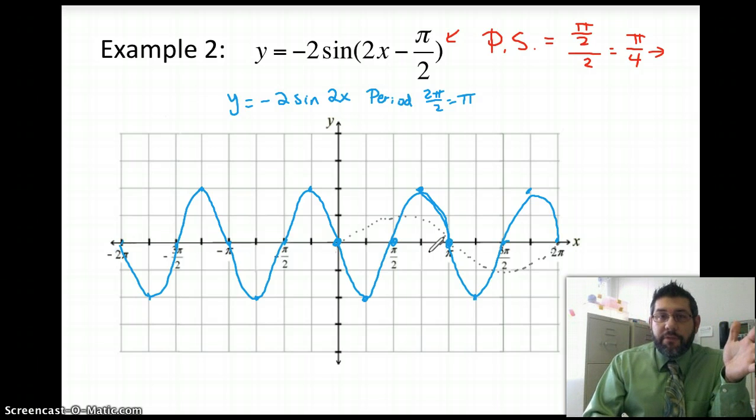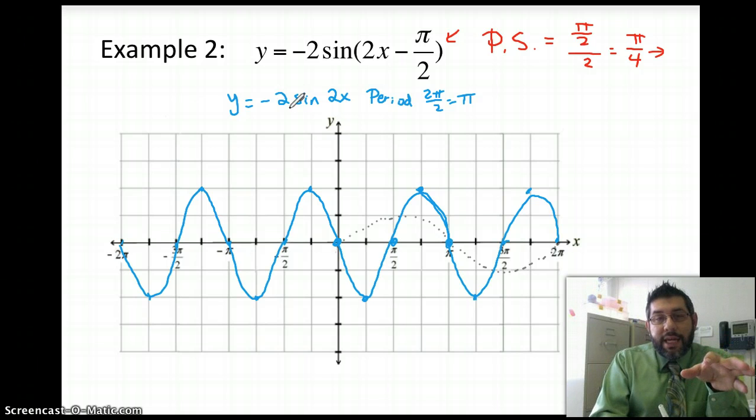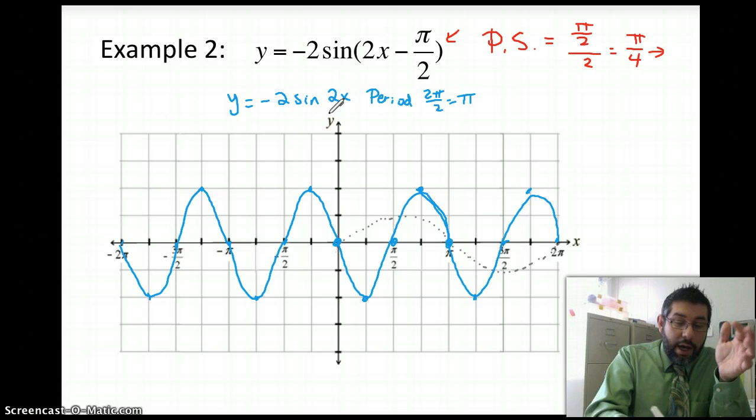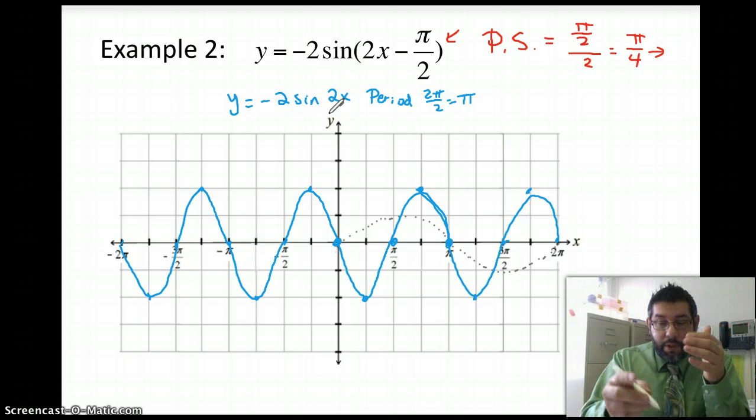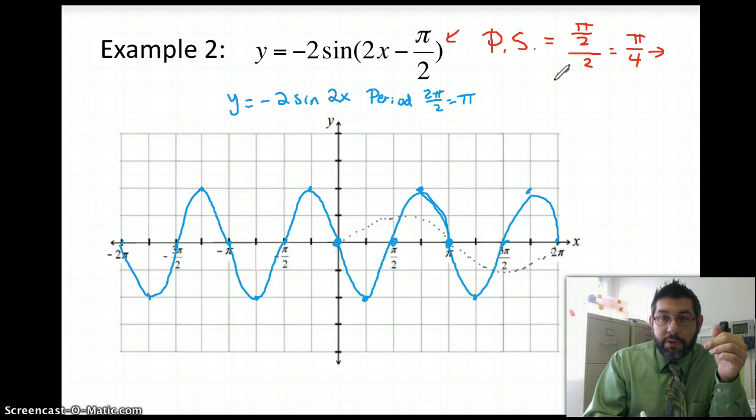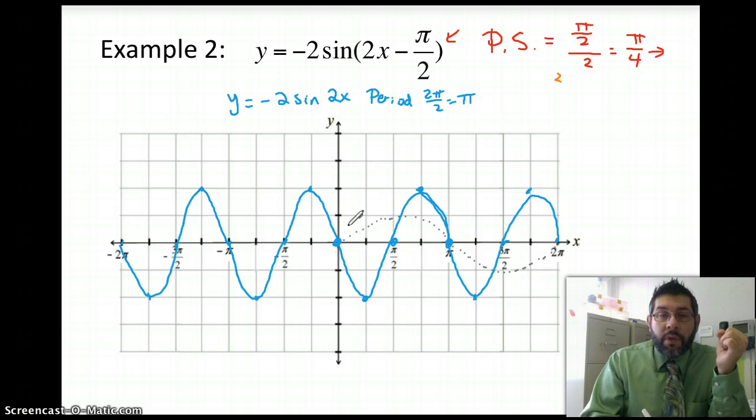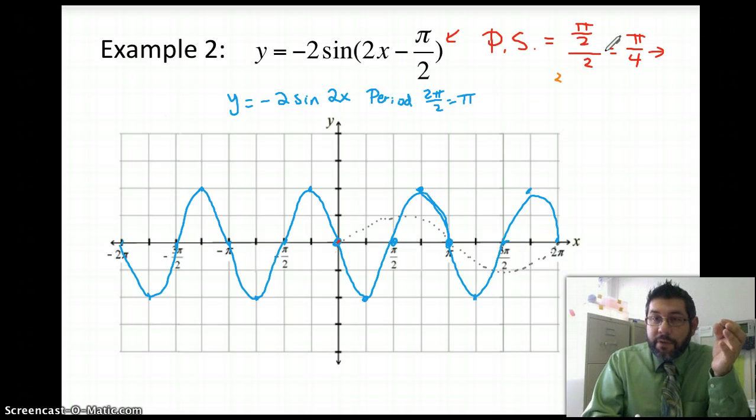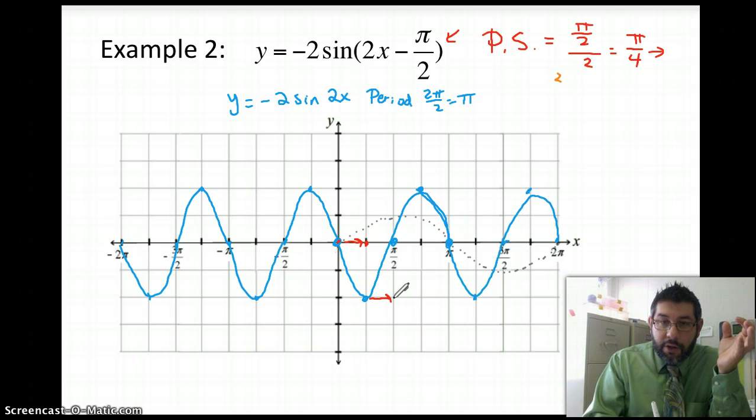What I'm going to do now is I'm going to do the shift now. So now that I have the period down, I have y equals negative 2 sine 2x. I'm going to shift it over. And how much am I going to shift it over? Pi over 4 units. So let's go ahead and do our shift here, pi over 4 units. So I'm going to take this point here, and I'm going to go over pi over 4 units. Here's pi over 2. Half of pi over 2 is pi over 4. So I'm going to take this point, and I'm going to shift it over right there. This point, shift it over right there.